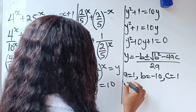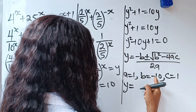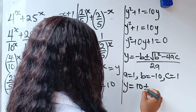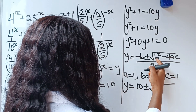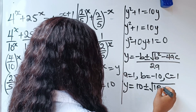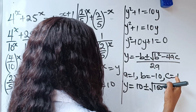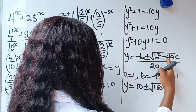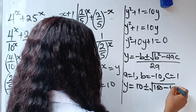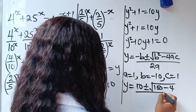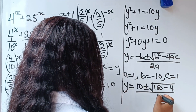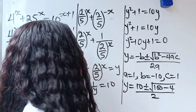Our y is equal to minus b, that is minus minus 10, which is 10, plus or minus square root of b squared — that is 10 squared, which is 100 — minus 4ac, that is 4 times 1, which gives us 4, divided by 2a, that is 2 times 1, which gives us 2.